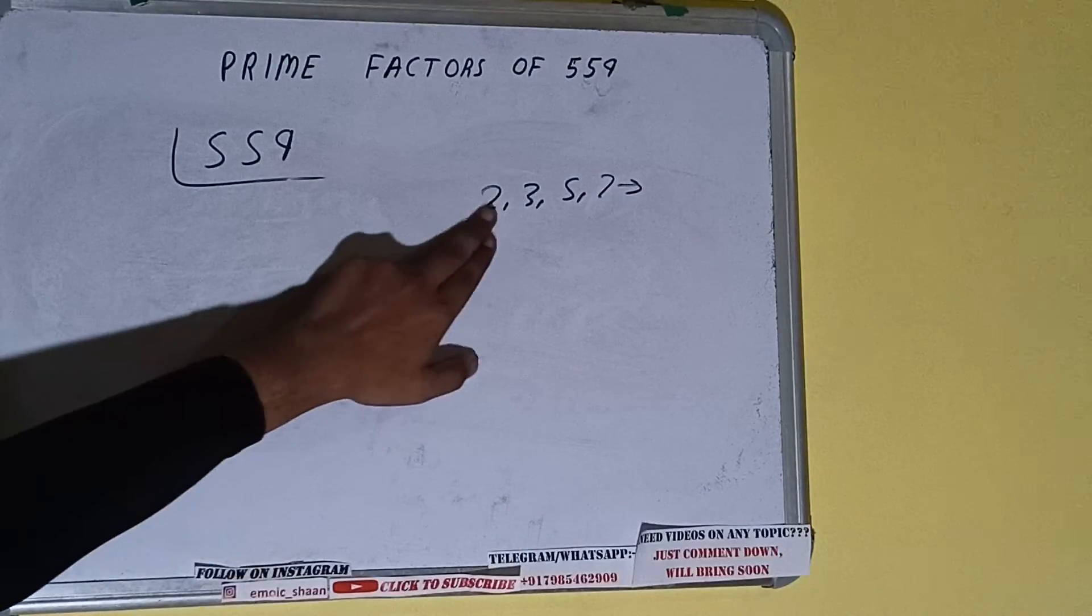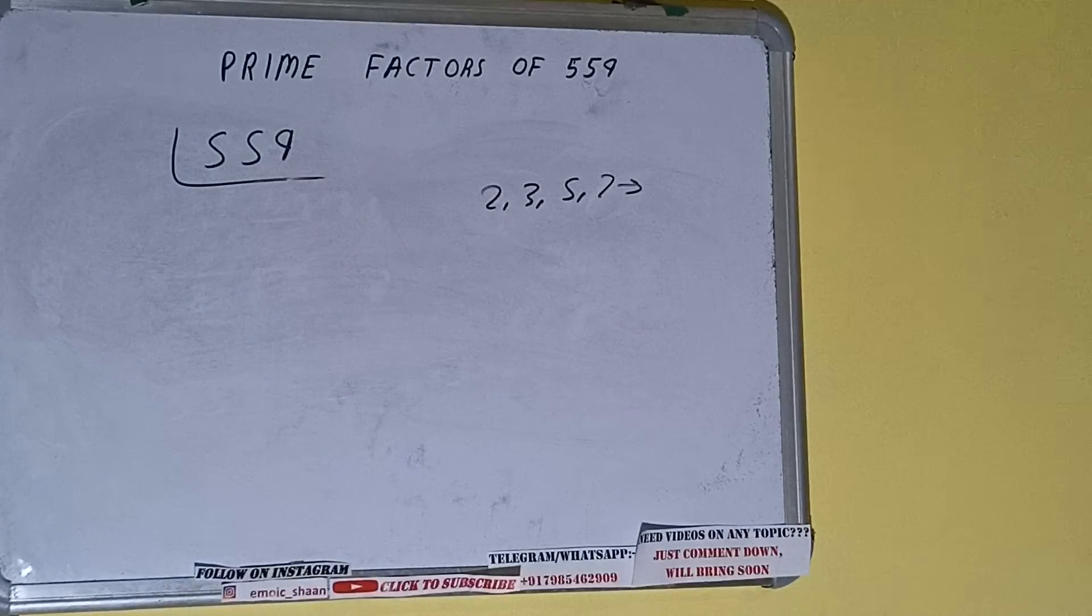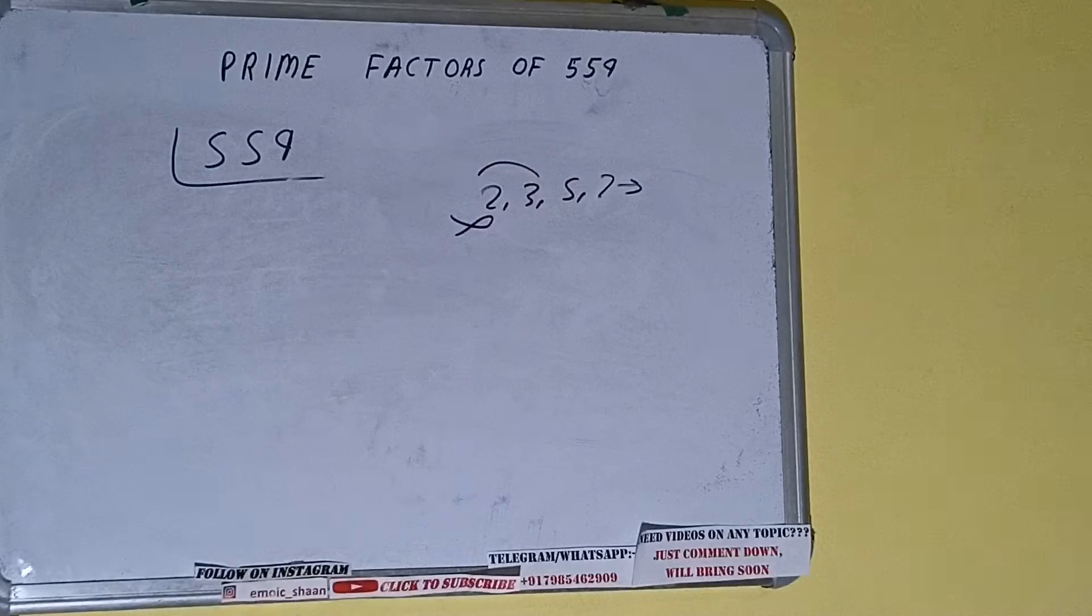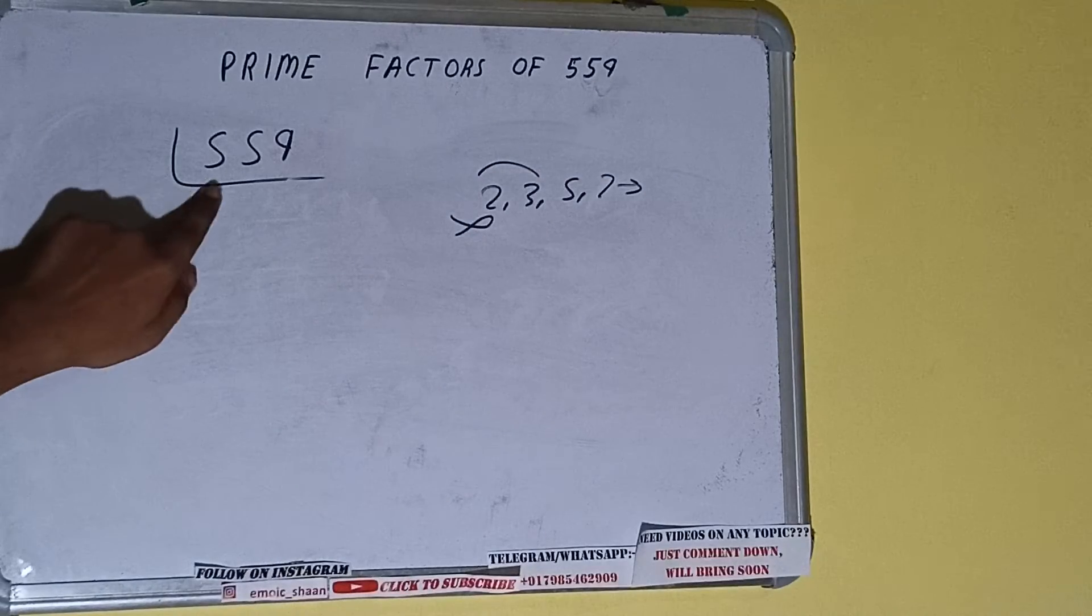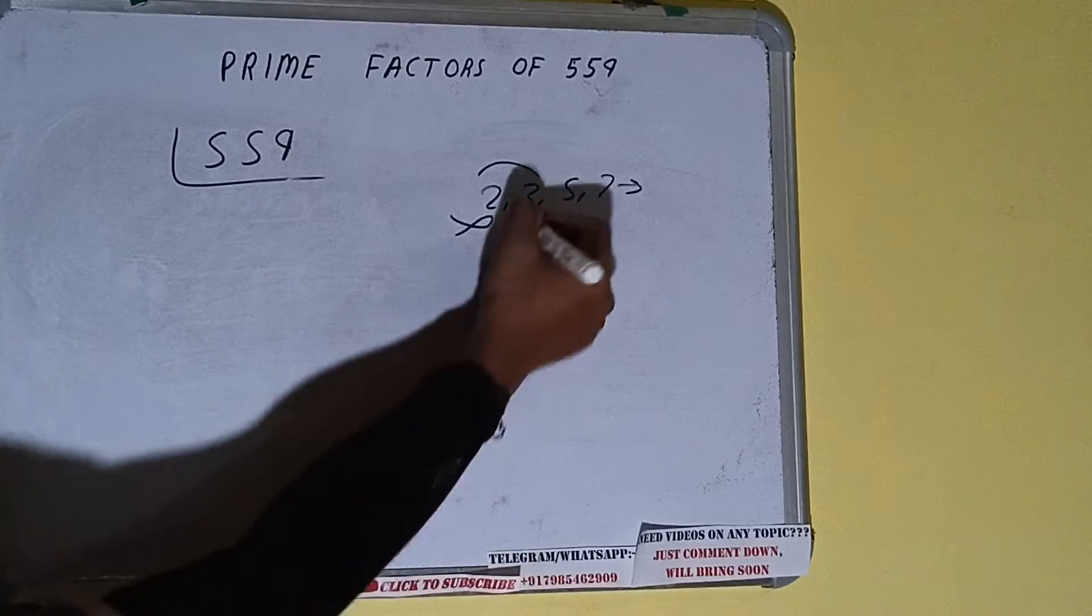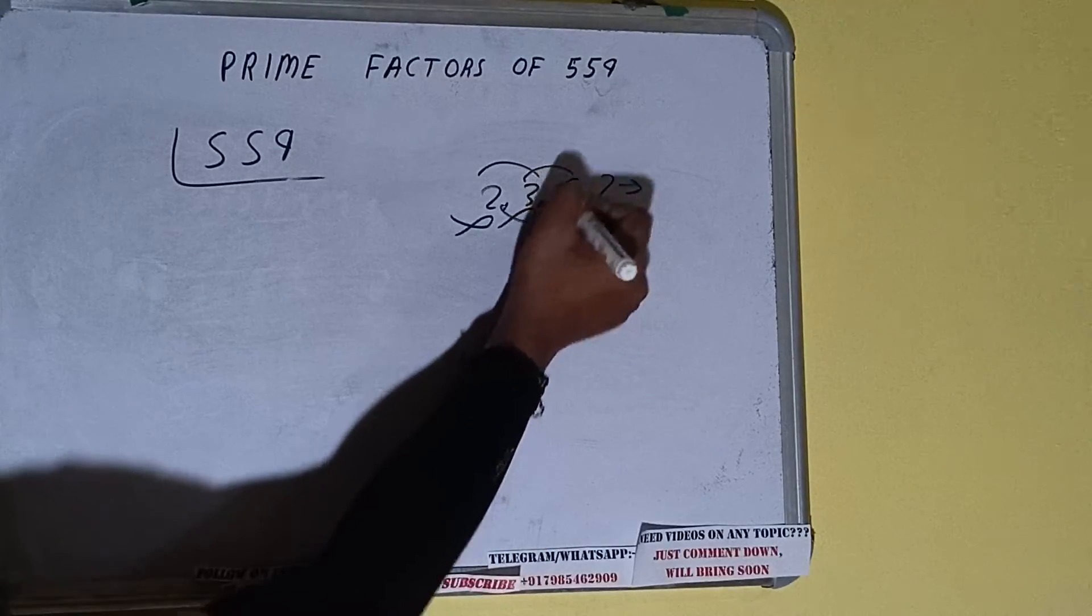Alright, so we will check with the lowest prime number, that is 2. Is 559 divisible by 2? It is not because the number is odd. So we will check with the next lowest prime number, that is 3. [Performing division] It is not divisible by 3 also. Let's check with 5. The last digit is neither 5 nor 0, so it is not divisible by 5 also.